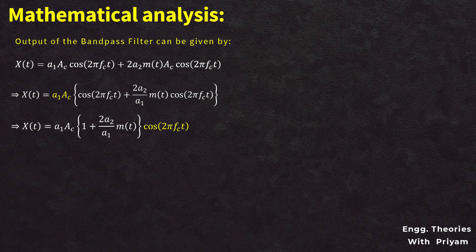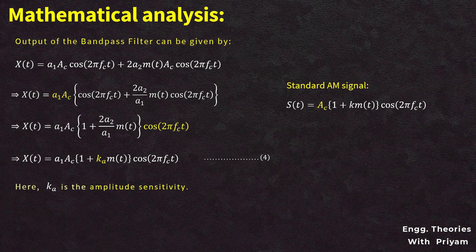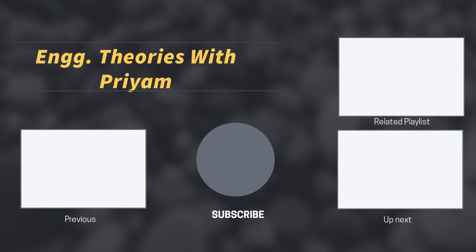This can be further simplified as x(t) = a1·AC·[1 + ka·m(t)]·cos(2πfc·t), which is equation number four, where ka is the amplitude sensitivity. The standard amplitude modulated signal is s(t) = AC·[1 + k·m(t)]·cos(2πfc·t). Comparing this standard equation with equation four, we can confirm that the square law modulator generates the amplitude modulated signal.